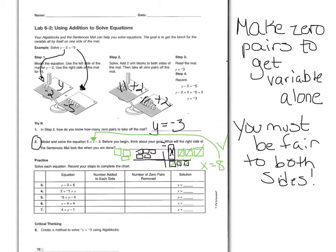Please solve the equations in the practice section and record your steps to complete the chart. What you are adding to each side creates the zero pairs, and the number you add equals the number of zero pairs to be removed. Let's try the first one: y minus three equals six. We add three to each side, removing three zero pairs, and y equals nine. I would like you to do numbers four and six, then show us.